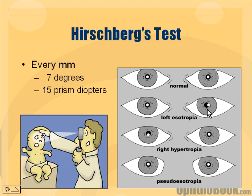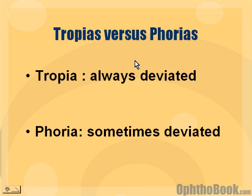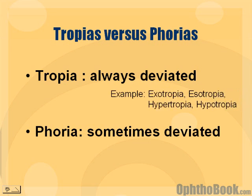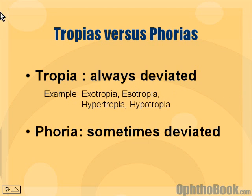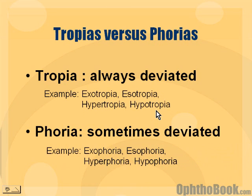We'll go over prisms in a second, but the Hirschberg test is very useful. Now, tropia means the eyes are always deviated — so an exotropia means the eyes are deviated outward, wall-eyed, always deviated. Phoria, on the other hand, means they're only deviated sometimes. Examples of tropias include exotropia and esotropia, plus hyper and hypo. For phorias, we'd call it an exophoria or an esophoria, etc.